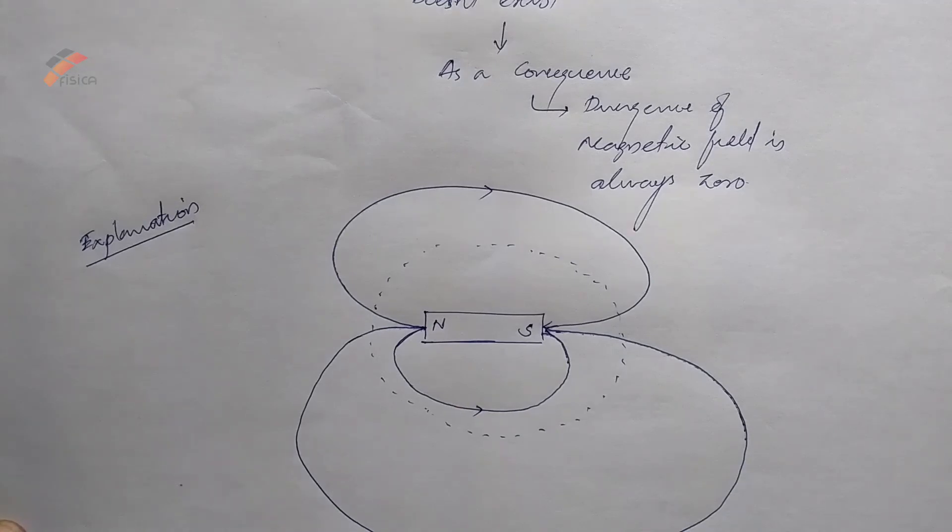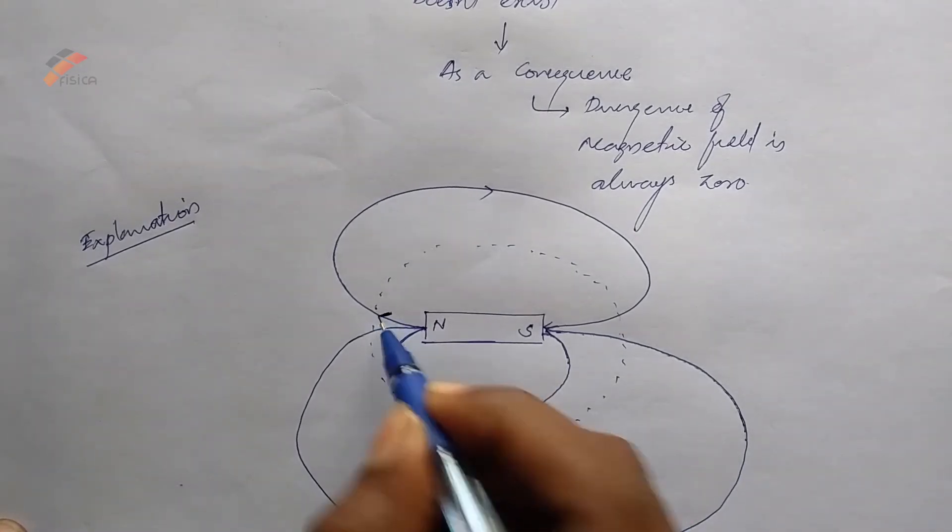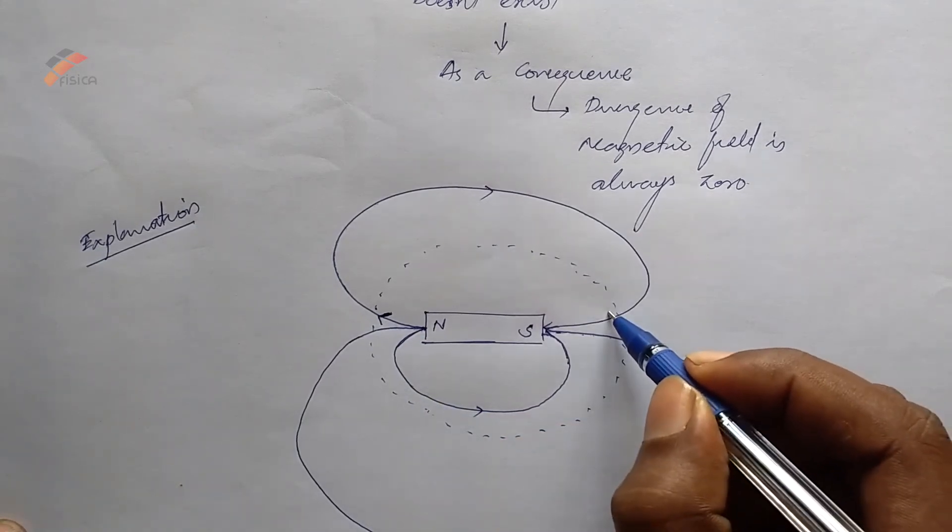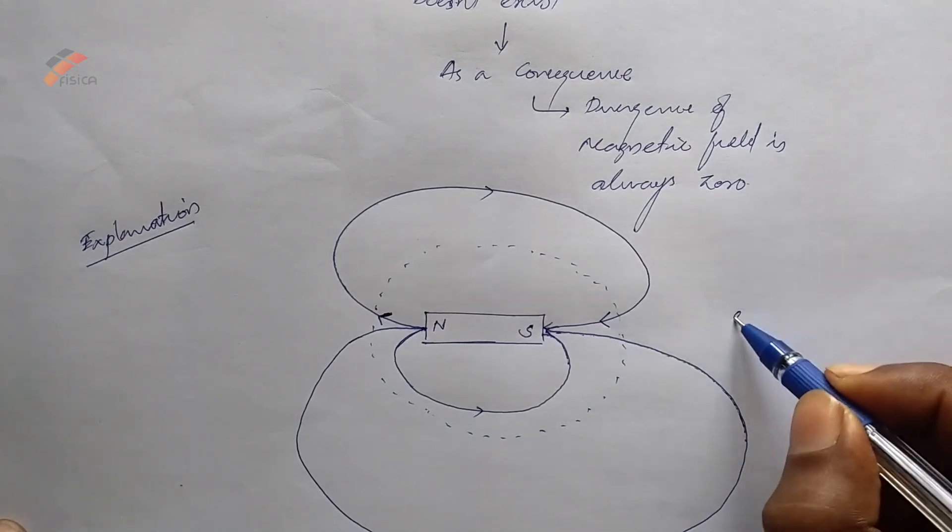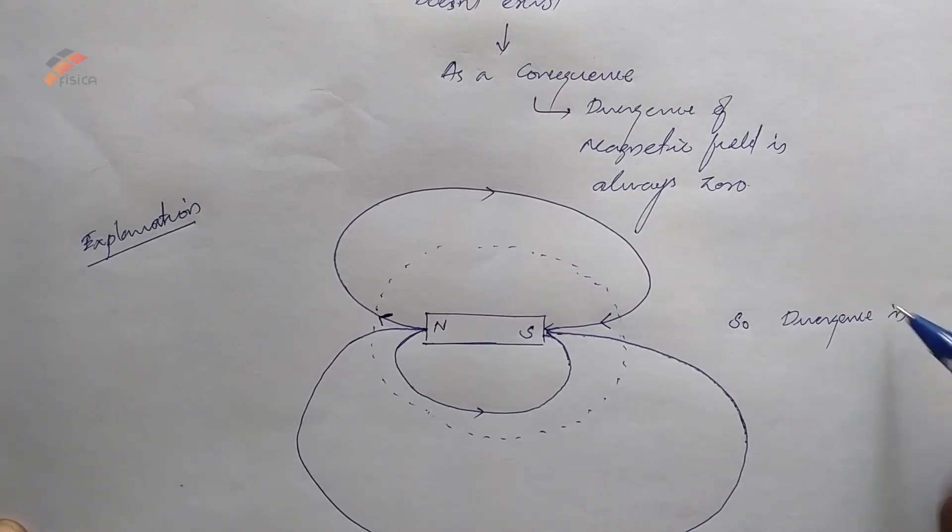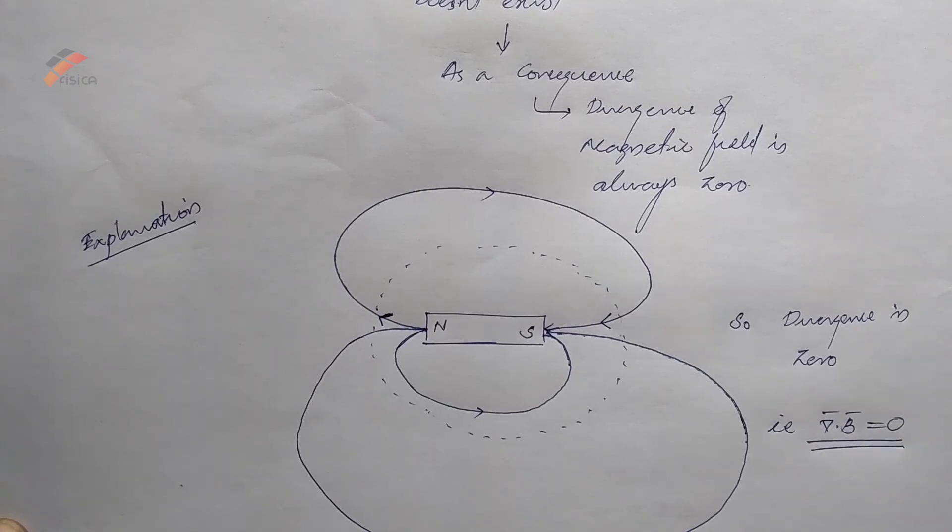Like this, so the number of magnetic field lines escaping from the Gaussian surface is also entering into it. So the total number of magnetic field lines diverging from Gaussian surface is zero. That is del dot B equal to zero and this is always true.